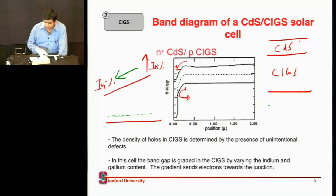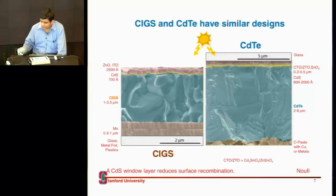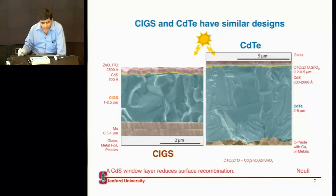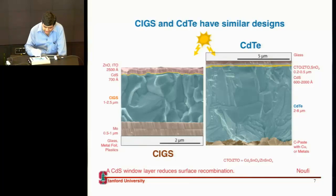If you look at the cross-section of these cells and compare it with a CdTe cell, they look very closely related. So they are close cousins — they essentially have the same set of layers.